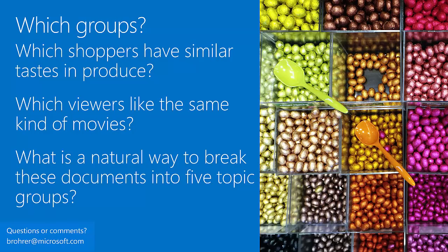The third question is 'which groups?' — which groups does the data naturally break down into? Imagine someone gives you a bag of M&Ms and says break this into similar groups. You'd probably start by color, but you could also do it by weight, diameter, or sugar content. Common examples: which shoppers have similar taste in produce? If you've watched movies streaming online and had movies recommended to you, that's the result of an algorithm asking 'which viewers like the same kind of movies?' — then it recommends movies your compatriots have seen that you haven't.